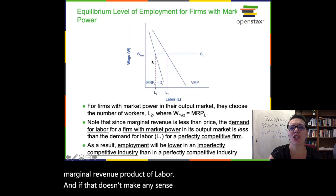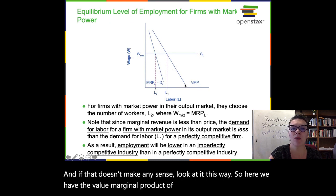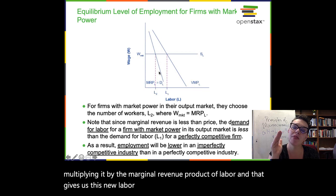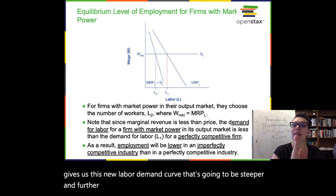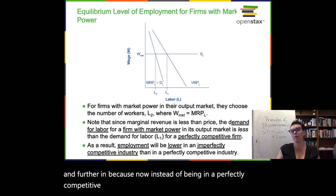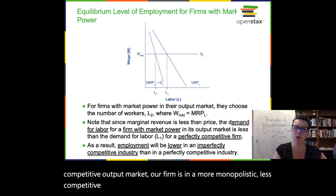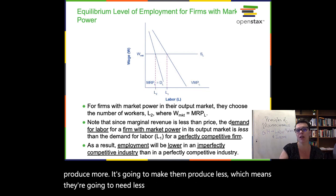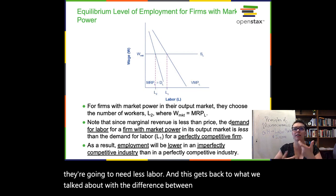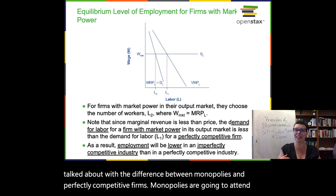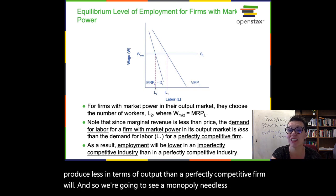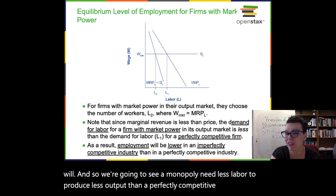The value marginal product of labor multiplied by marginal revenue gives us a new labor demand curve that's steeper and further in. Because our firm is in a more monopolistic, less competitive output market, they're going to see their marginal revenue fall as they produce more — making them produce less and need less labor. Monopolies are going to tend to produce less output than a perfectly competitive firm, and so we're going to see a monopoly need less labor to produce that less output.